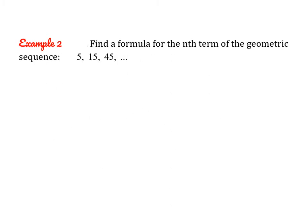Let's do another one together. This one says find a formula for the nth term of this geometric sequence. It's very obvious for this particular sequence that the common ratio is 3 — you can see that each time we're just multiplying by 3. But let's try the test just to make sure, and so you know how to do it if the numbers were a little trickier.